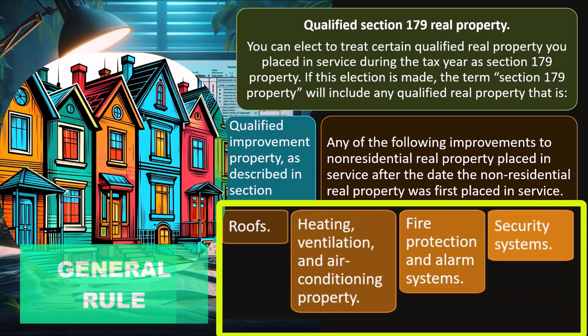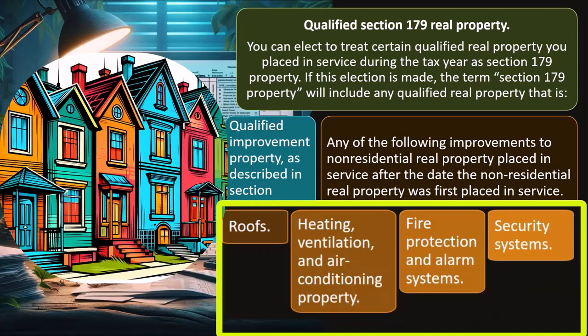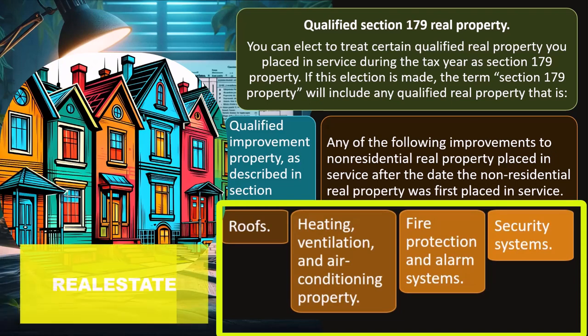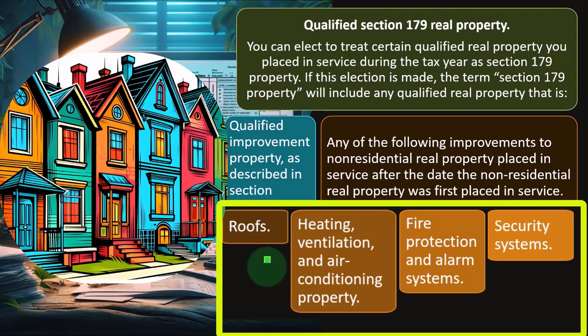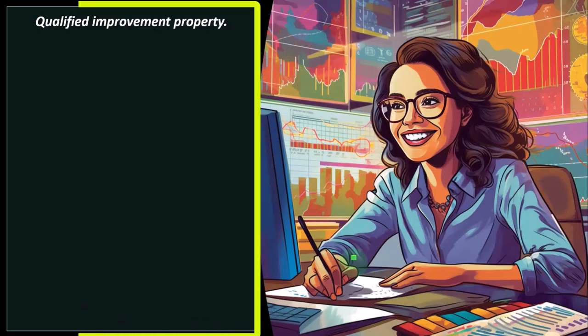For small businesses, it's usually fairly straightforward if it's a piece of equipment — whether it's depreciable and how to depreciate it is pretty well outlined by the code. Certain areas, especially when dealing with real estate, can get quite complex. Some CPA firms actually specialize in finding the best depreciation strategy for a building, trying to break out the building into different components to depreciate certain parts faster. So you have to be aware when dealing with different clients — what your specializations are, what your network looks like, who you want to take on, and who is outside your scope.